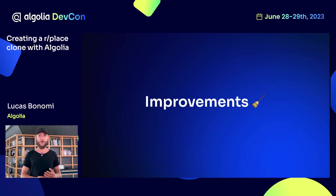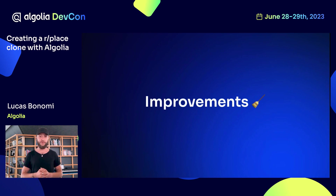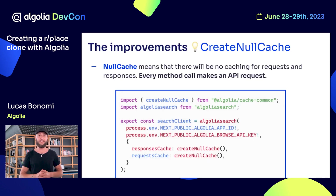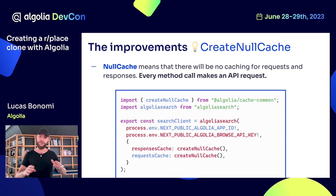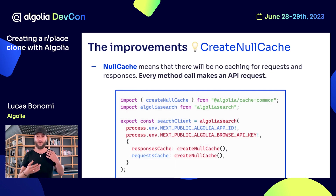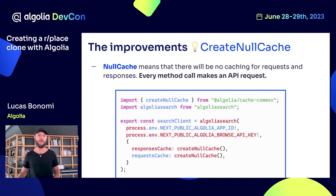On the improvements, we will see how I fixed the cache issue, the security issues, how I made the canvas bigger, and I also created a simple user counter. Finally I'll show you a super nice feature called the replay. Let's start with the cache. A colleague told me that Algolia was also exposing something called createNullCache. By default Algolia will cache your queries — super nice feature — but I want uncached responses every time because I want real-time interactiveness. So I used null cache, and it worked.